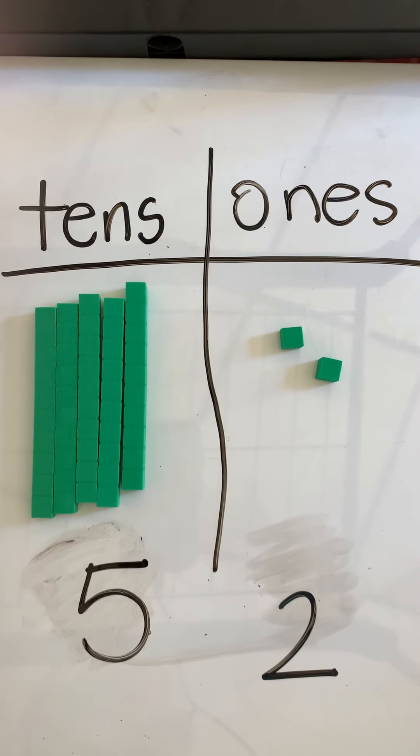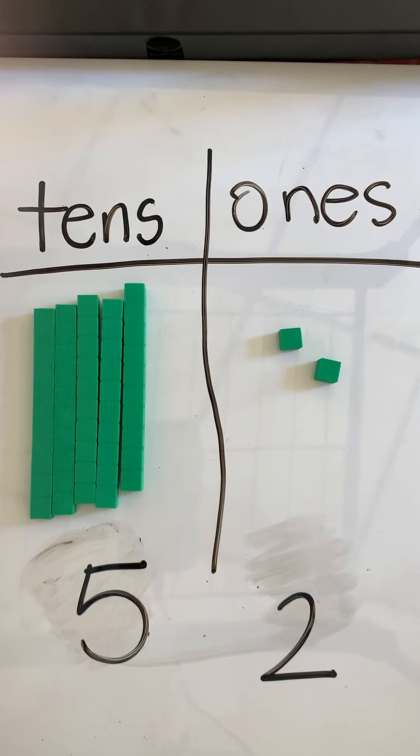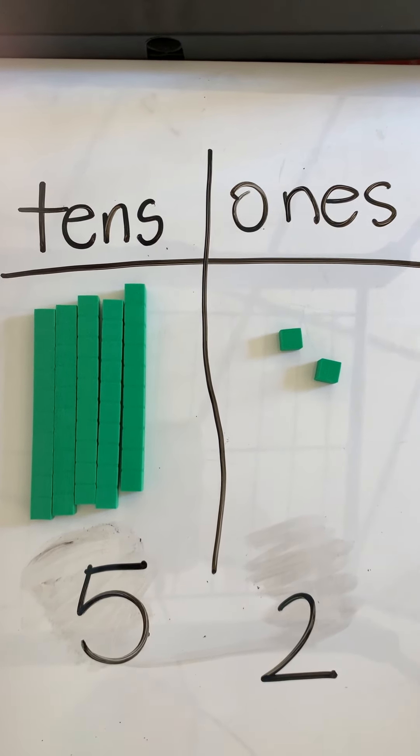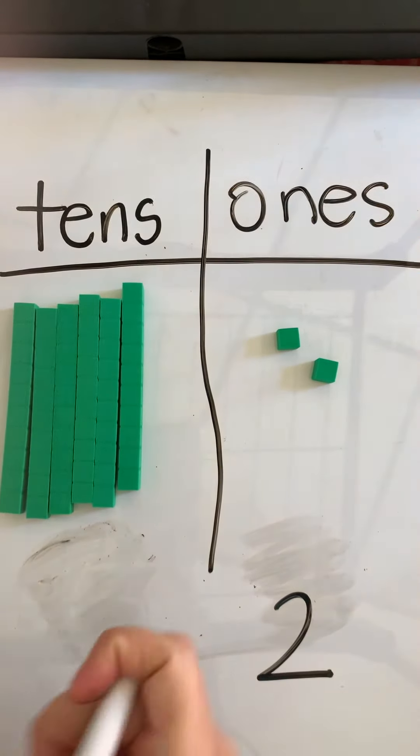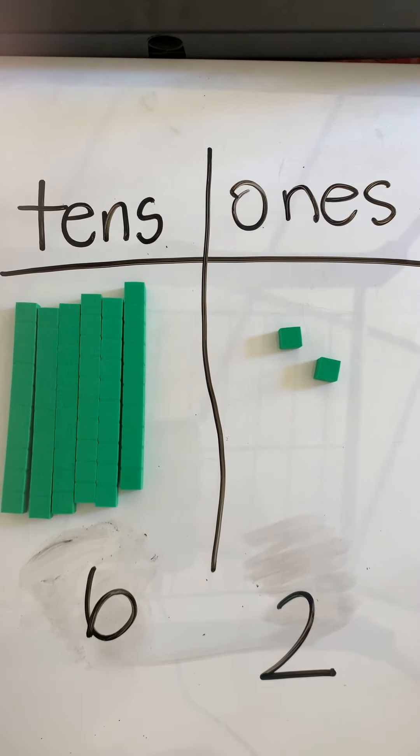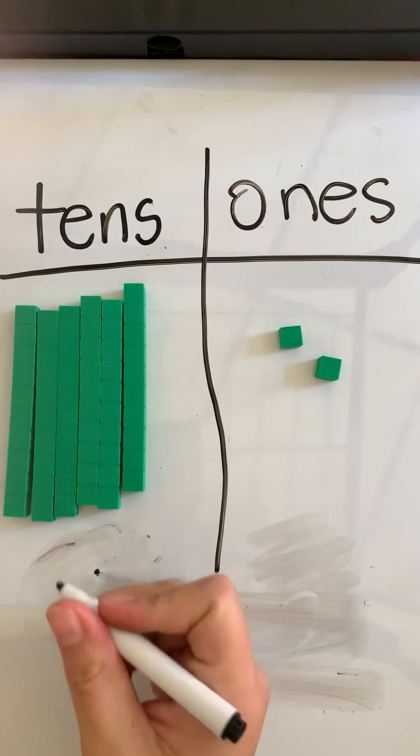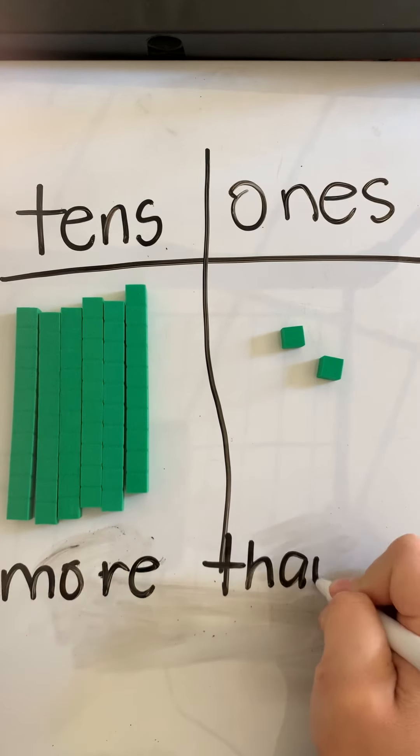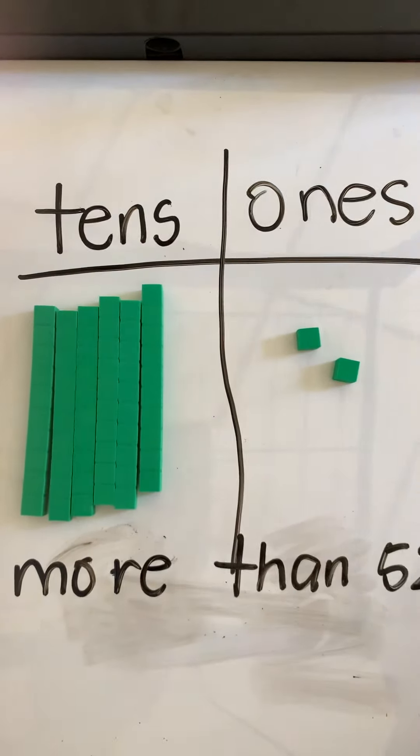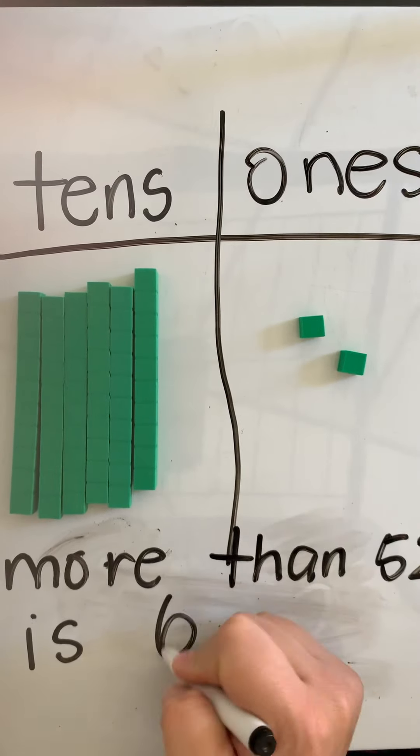Now I want you to stop and think. If I'm going to have 10 more and I'm going to add to the tens place, what will my new number be? I'll be adding another 10, which will change my number to 62. So I will see that 10 more than 52 is 62.